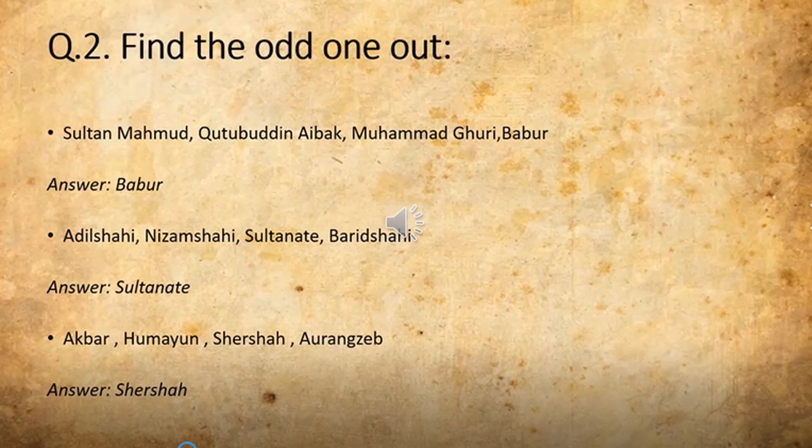For these questions also, students, you have to study. You have to study and then only you are going to select the right option and the correct answer. The second set: Adil Shai, Nizam Shai, Sultanah, and Barid Shai. The odd one out here is Sultanah.